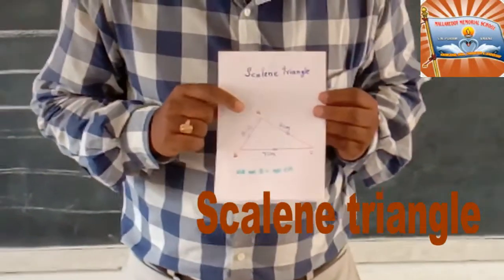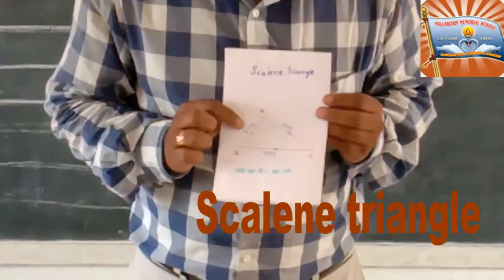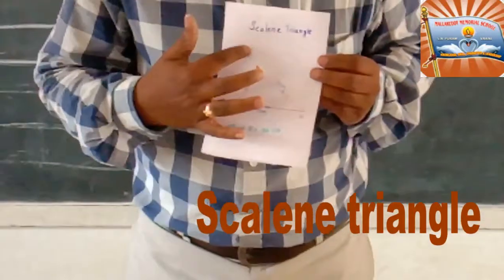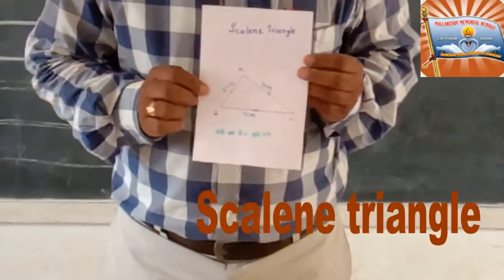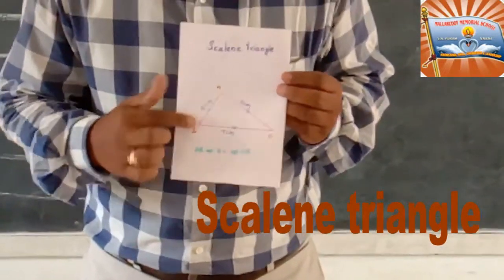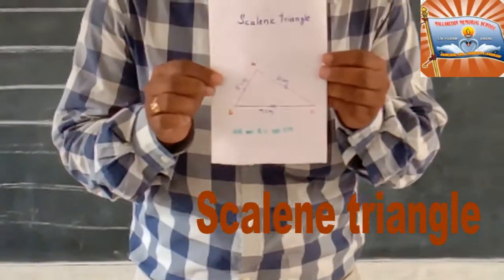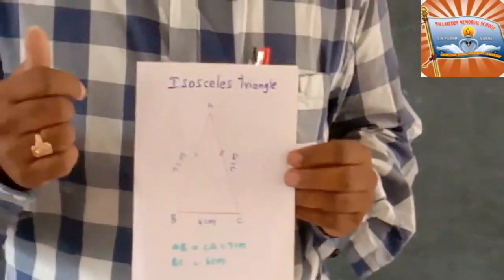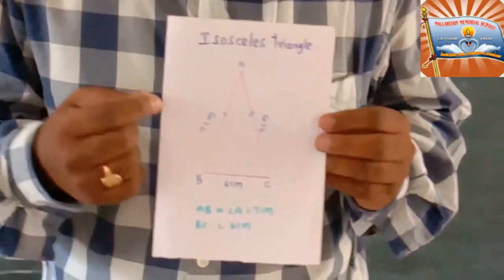If you observe this triangle, AB is 5 cm, BC is 7 cm, CA is 6 cm. So there are no equal sides in this triangle, so this type of triangle is called scalene triangle.